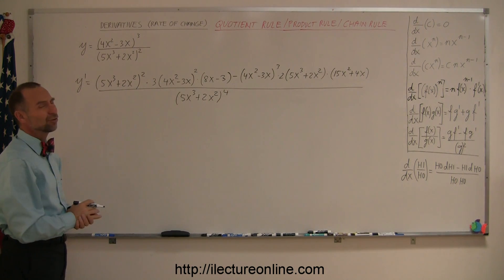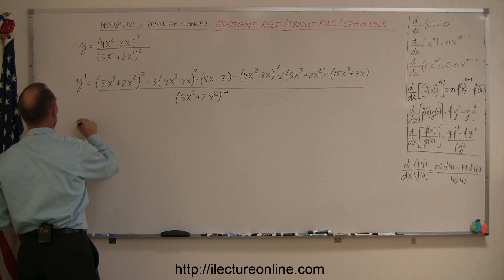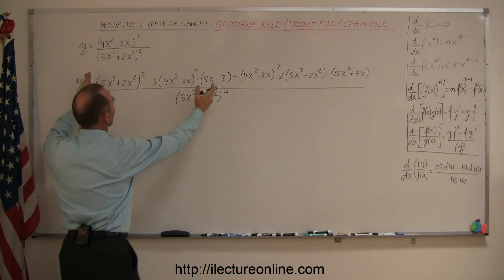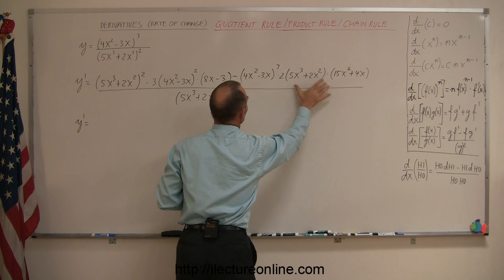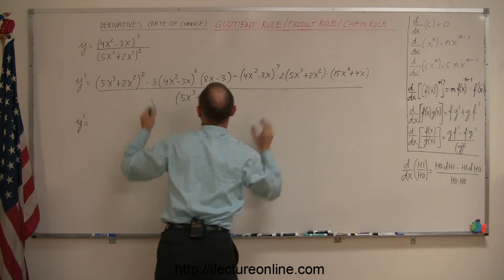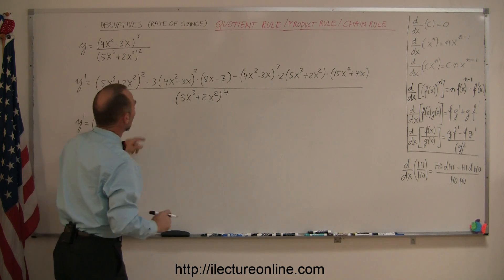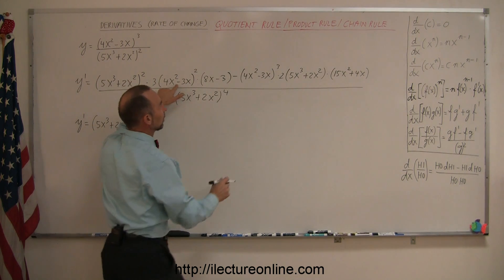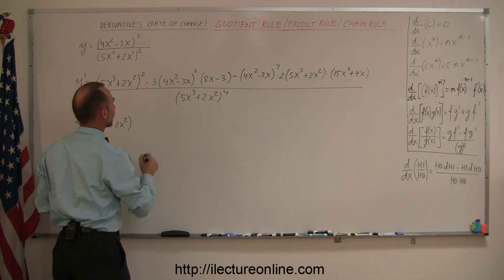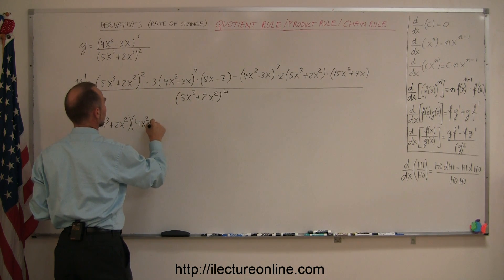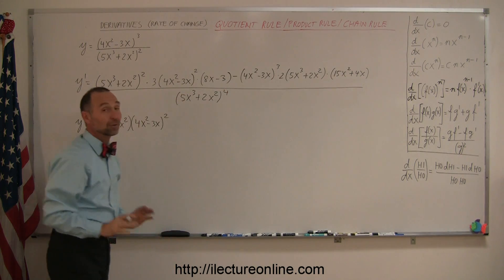And that's the derivative of that. Now we usually don't want to leave it quite like this, especially since you can probably factor out some common factors. So let's look for those. We have one term minus another term. We have a 5x cubed plus 2x squared to the second power and a 5x cubed plus 2x squared to the first power, so we can factor one of those out. We also have a 4x squared minus 3x to the second power and to the third power, so we can factor out a 4x squared minus 3x squared. The 8x minus 3 and 15x squared plus 4x are not common, so they stay.